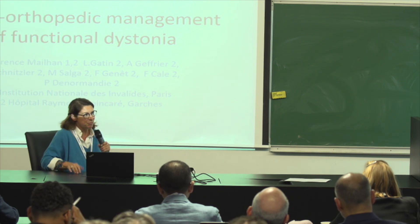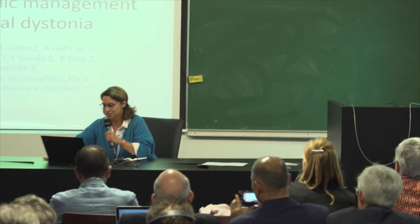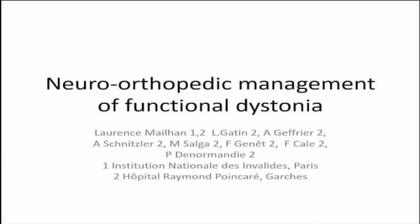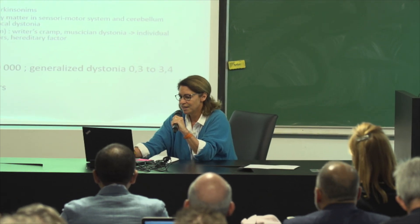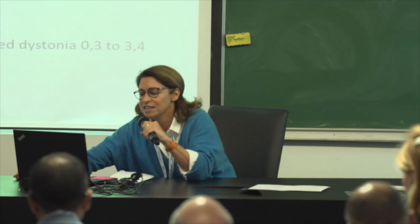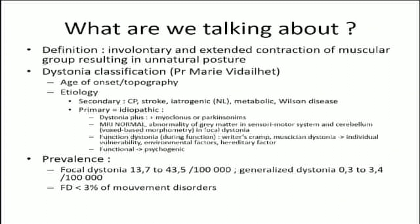I will talk about neuro-orthopedic management of functional dystonia, because we have seen in recent years a few patients that were very destabilizing for us, and so we asked ourselves how to manage this type of patient. First, what are we talking about? The definition of dystonia is involuntary and sustained contraction of a muscular group resulting in an abnormal posture. We looked for classification of dystonia, and Marie Vidaillet, a neurologist in Paris and the referent in dystonia, proposes different classifications by age of onset, topography, and etiology.